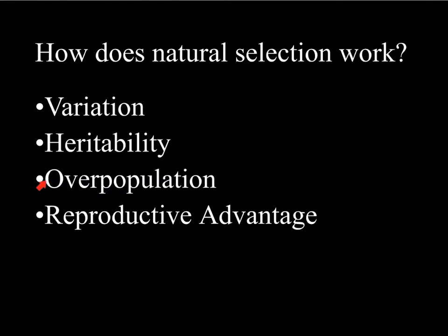Third is overpopulation — the idea that not everyone is going to survive, so some individuals survive and others do not. And finally, reproductive advantage: the idea that individuals with traits more likely to help them survive and reproduce pass on those traits to the next generation through genes, and that's how we get adaptations.